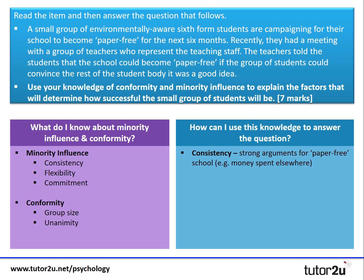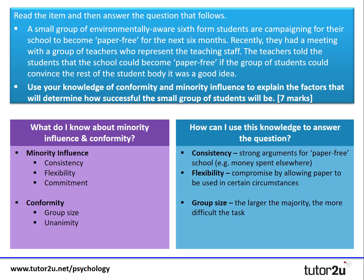Consistency relates to how strong the small group of students' arguments will be about going paper free — for example, arguing that money spent on photocopying could be spent elsewhere. Flexibility means they need to compromise and allow paper to be used sometimes, such as during revision time or mock exams. On the conformity side, group size matters: the larger the majority, the more difficult the task will be. And unanimity — support from members of the large group — could increase the chances of success.